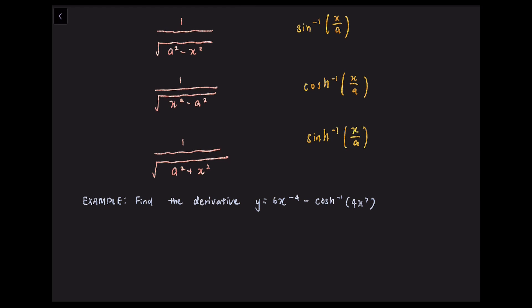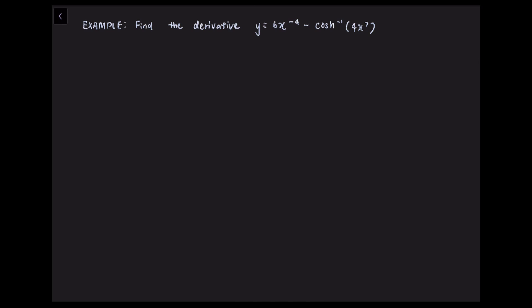Let us now look at this example. We want to find the derivative of y equals 6x to the power of negative 4 minus inverse cosh of 4x to the power of 7. Applying the chain rule, we get y prime equals negative 24x to the power of negative 5, minus 1 over the square root of (4x to the power of 7) squared minus 1, times 28x to the power of 6. And simplifying, we get the result.